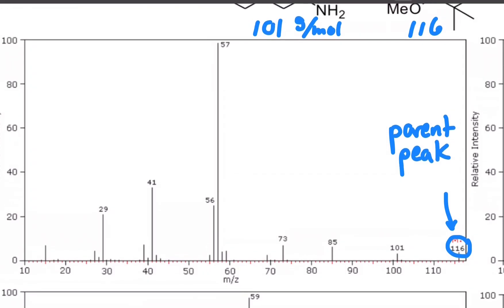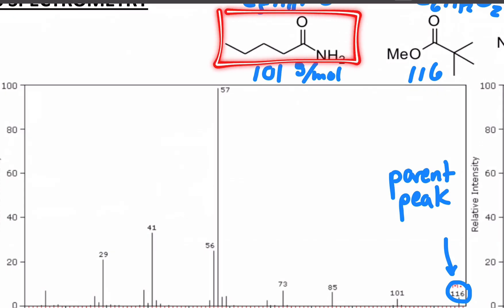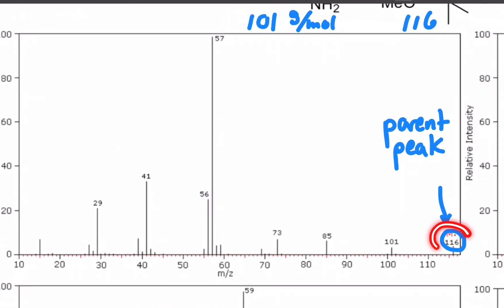The way mass spectrometry works is a molecule is ionized so that it can be detected. In other words, it's given a charge and it's turned into most often a radical cation. And then different mass ions are detected by the instrument. The conditions of the instrument are such that we often can detect the whole molecule itself.